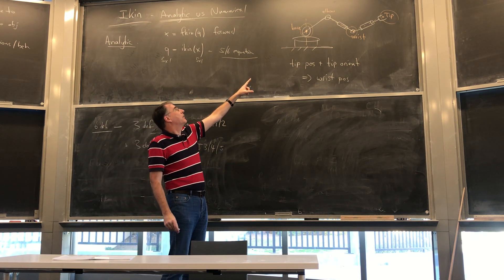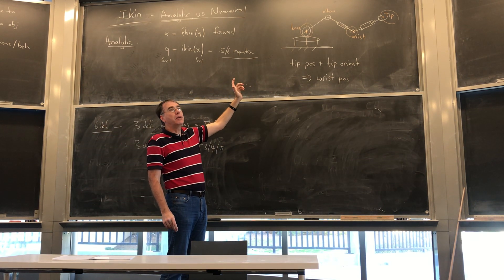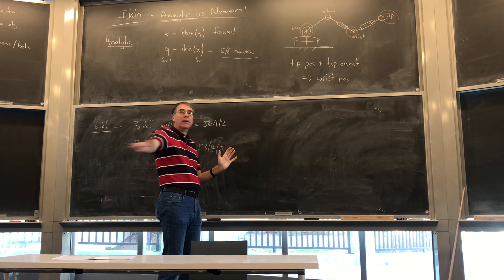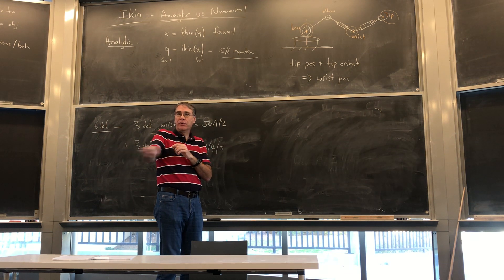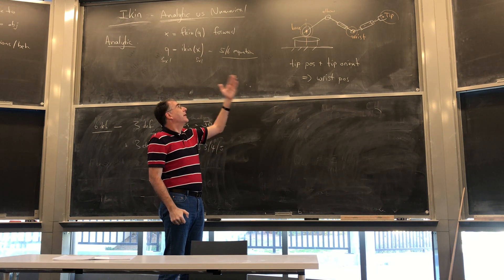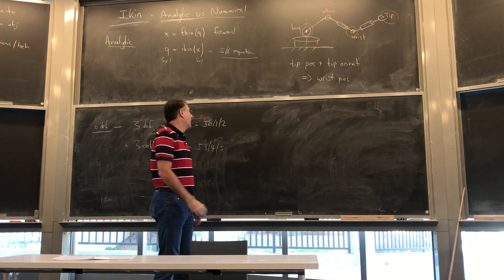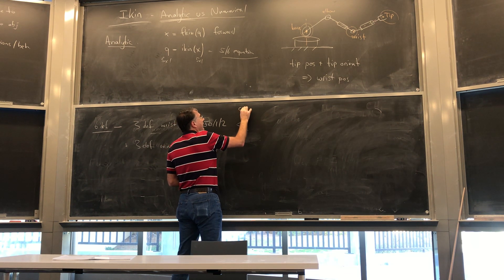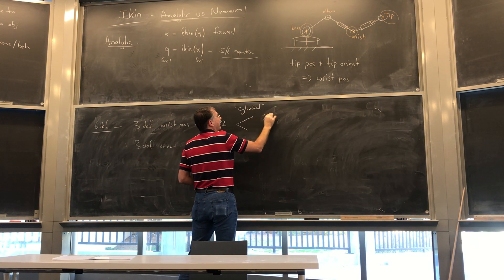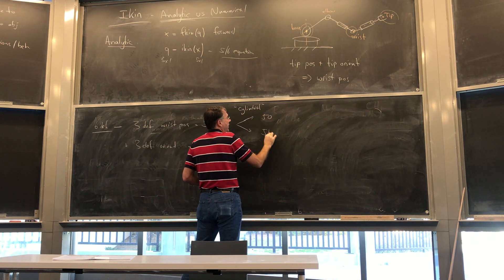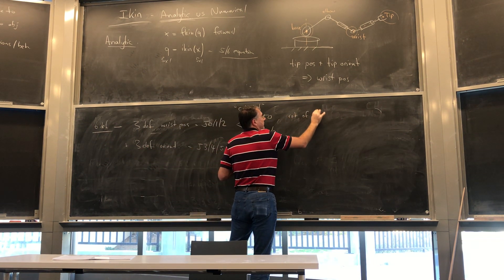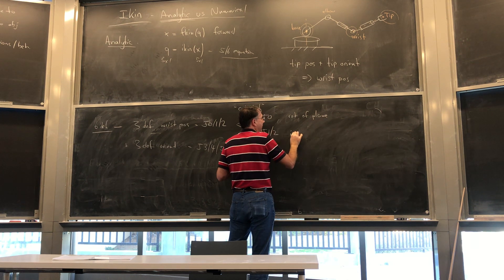Further, if you have the configuration I keep calling cylindrical — by that I mean the base axis is vertical so it rotates in the horizontal plane, and then the other two axes are horizontal so they just slide — do you agree that that is a plane that is rotating?